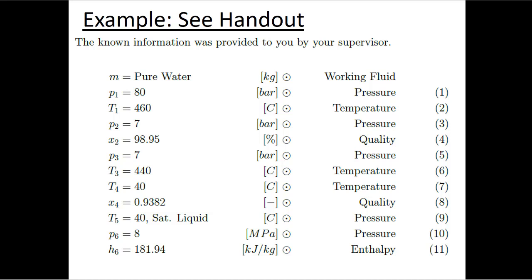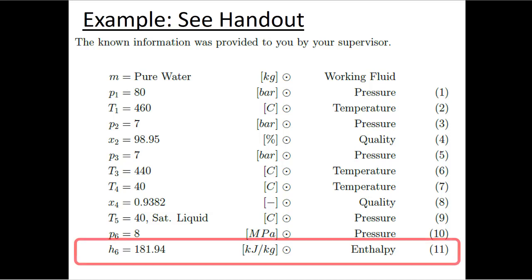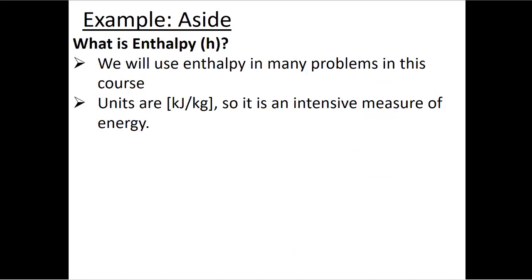We're familiar with most of the properties on this list, but at state six we have a little h, which is enthalpy. We don't need to know too much about enthalpy yet — it's more important when we start to look at open systems — but here it's another property that we can find on our tables. We'll use enthalpy in lots of problems in this course. It has the same units as specific internal energy: kilojoules per kilogram, so it is an intensive measure of energy.